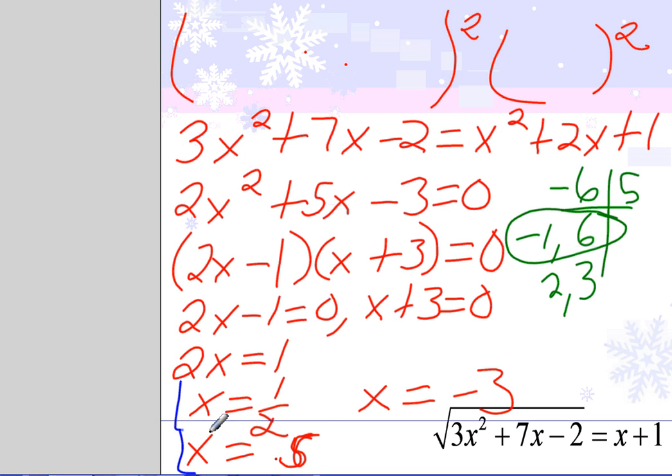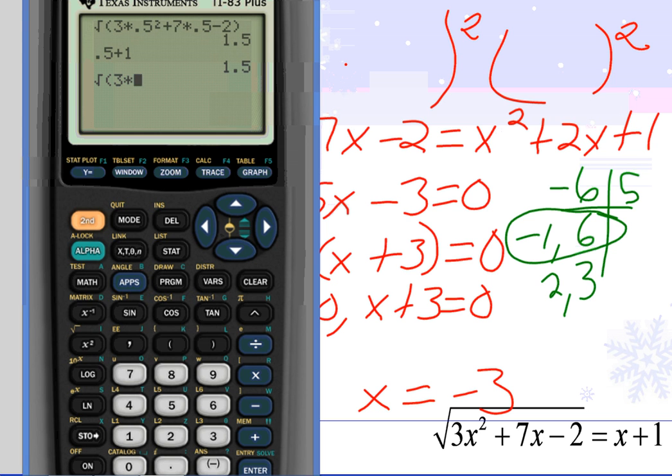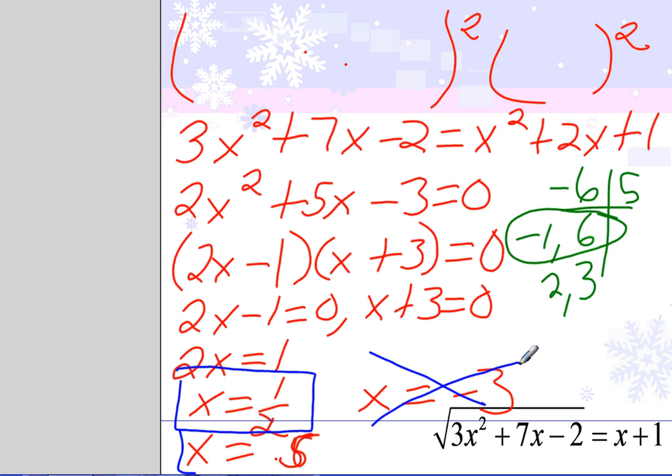So 0.5, or actually 1 half. I'm not interested in the decimal. I'm interested in the simplest fraction. 1 half is the solution. Let's check the other one. The square root of 3 times negative 3 squared plus 7 times negative 3 minus 2. It's positive 2, right? Negative 3 plus 1 is negative 2. So they do not equal, and this is not a solution. So this one only has one solution.